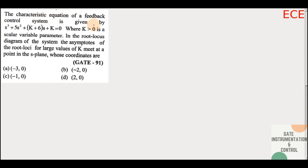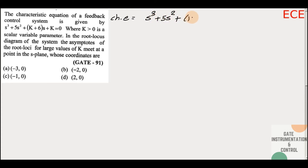To find the centroid, we need the open-loop transfer function. But here we are given the characteristic equation. Until now, in all questions, we used to find the characteristic equation from the transfer function. So now in this question, we will do the reverse — find the transfer function from the characteristic equation.